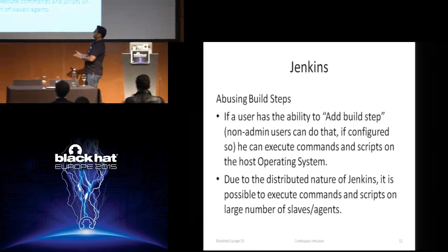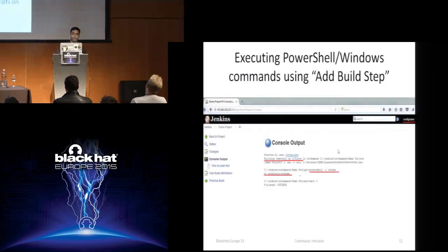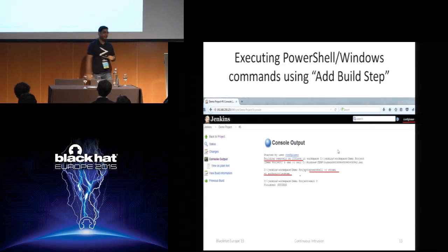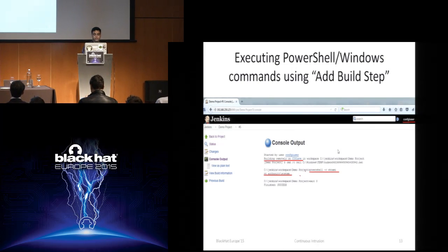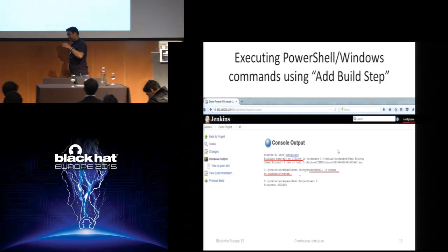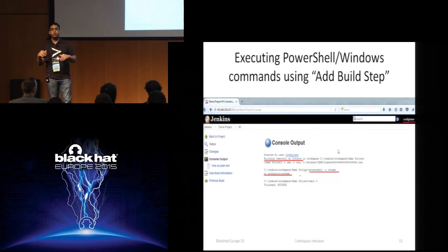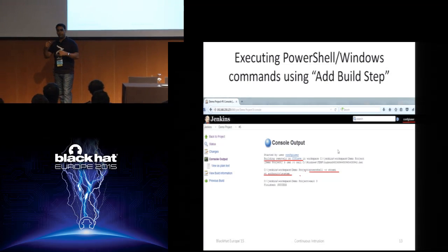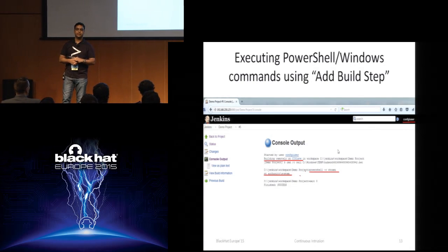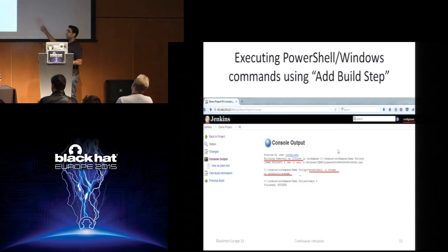Due to the distributed nature of Jenkins, it is possible to execute commands and scripts on a large number of slaves. You can see that on a slave machine, we have access as system. What makes CI tools worse in terms of security is that in many web consoles — industrial tools or management consoles — if you have access, even admin access to a web console, it is really not easy to achieve command execution on the OS. That is considered a vulnerability in most cases. But that is not the case with CI tools.